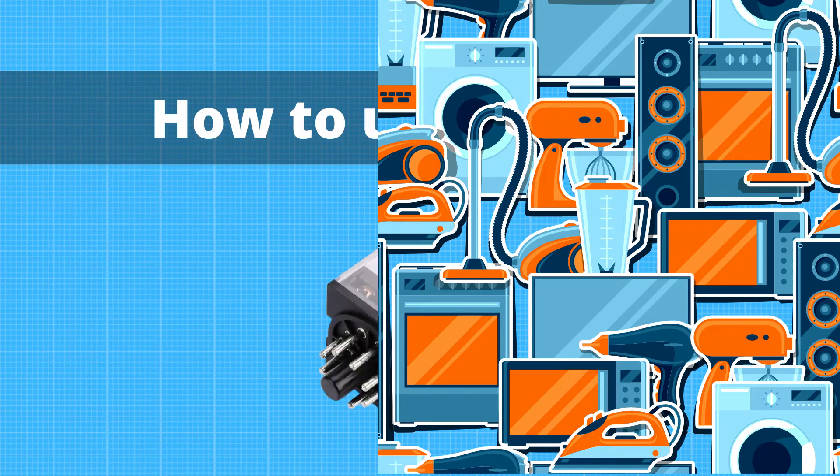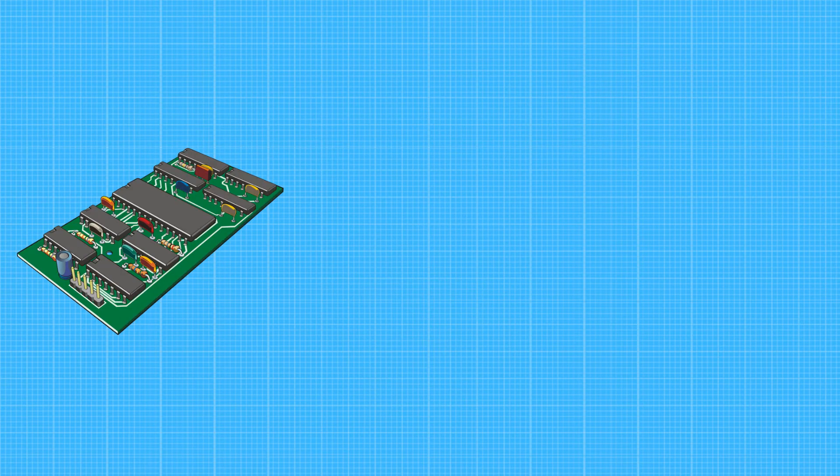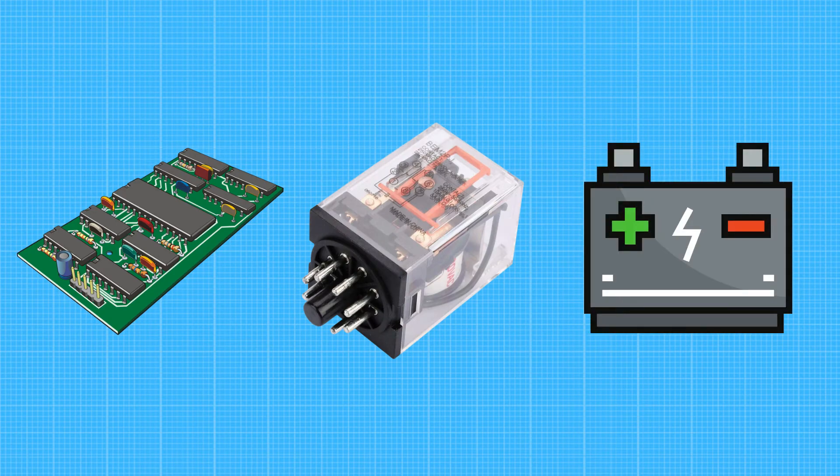Relays can be either mechanical or electronic. To use a relay, first identify the device that you want to control and the relay that you want to use. Next, connect the power supply to the device, and then connect the input of the relay to the device.